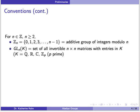For an integer n greater than or equal to two, Z_n will denote the additive group of integers modulo n, and GL_n(K) will be the set of all invertible n by n matrices with entries in K, where K could be Q, R, C, or Z_p where p is prime.